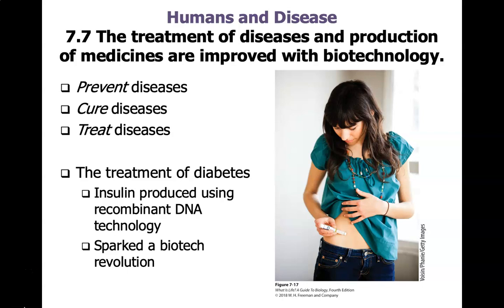A fantastic example of how biotechnology has been used in the treatment of disease is in the production of insulin. Diabetes is a chronic disease in which your body can't produce insulin. Insulin is required to break down sugar in your blood, and there are many complications from this — besides the spike in blood sugar, you also get vascular disease, kidney damage, and nerve damage.